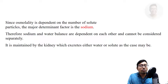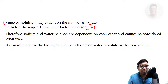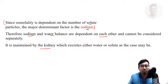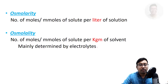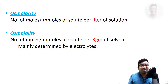Since osmolality is dependent on the number of solute particles, the major determinant factor is sodium. Therefore, sodium and water balance are dependent on each other — they are very much interdependent. When osmolality varies, water has to travel to maintain osmotic balance, and the kidney maintains this by either excreting water or excreting solute, that is sodium. Osmolarity is number of moles of solute per litre of solvent; osmolality is per kilogram of solvent.